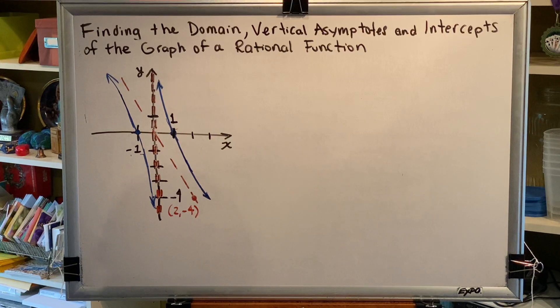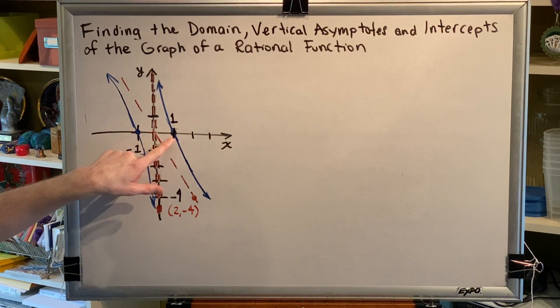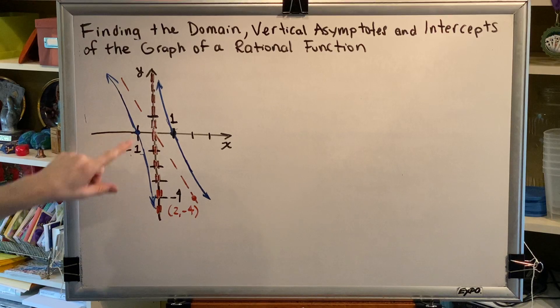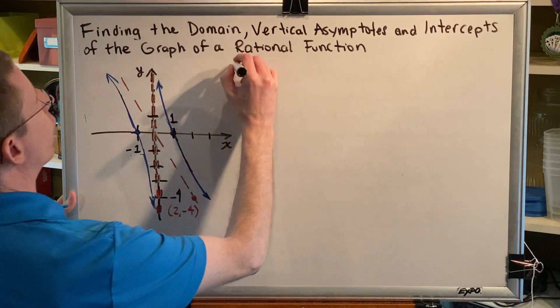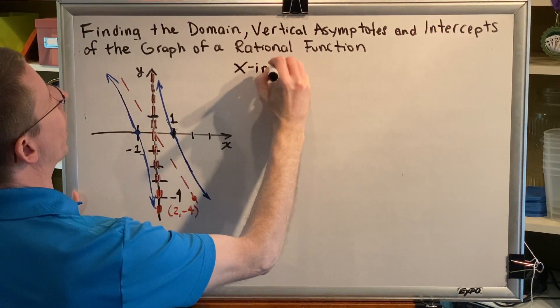We can only see two such points, right here at 1, 0, and right here at negative 1, 0. So there are two x-intercepts.